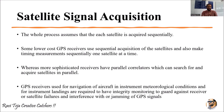This whole process is performed for each and every satellite sequentially. Most GPS receivers are low-cost receivers, and these low-cost GPS receivers use sequential acquisition of satellites, making timing measurements sequentially one satellite at a time.